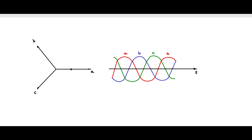That is two pi by three radians apart. Let me also draw the negative portions of the axes. B phase is two pi by three radians apart from a; c phase is four pi by three radians apart from a — all measured anti-clockwise.